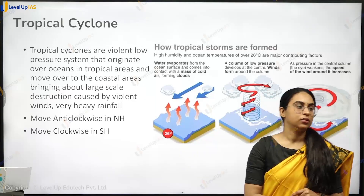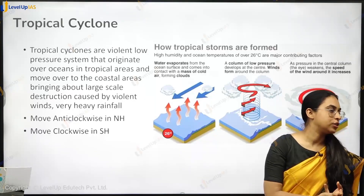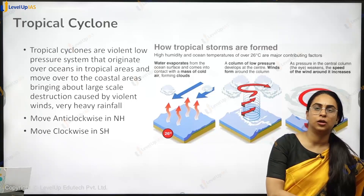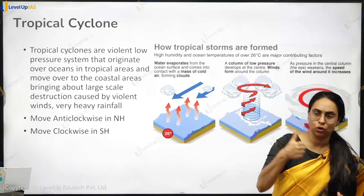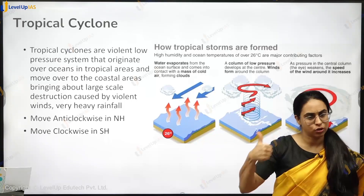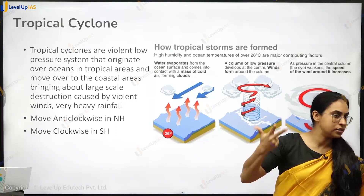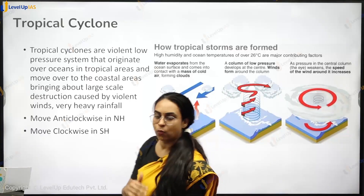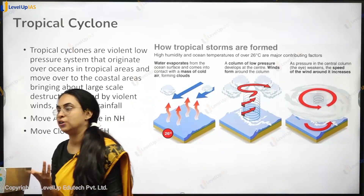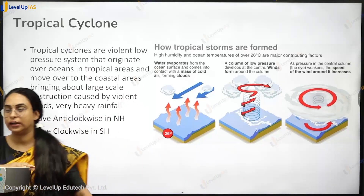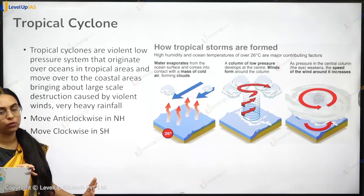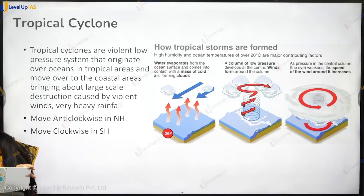Tropical cyclones are nothing but low pressure depressions formed in the tropical areas due to thermal currents. They form on the water. They move anti-clockwise in the northern hemisphere and clockwise in the southern hemisphere.